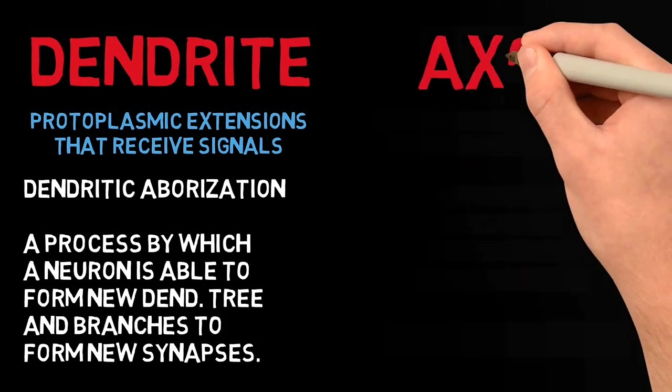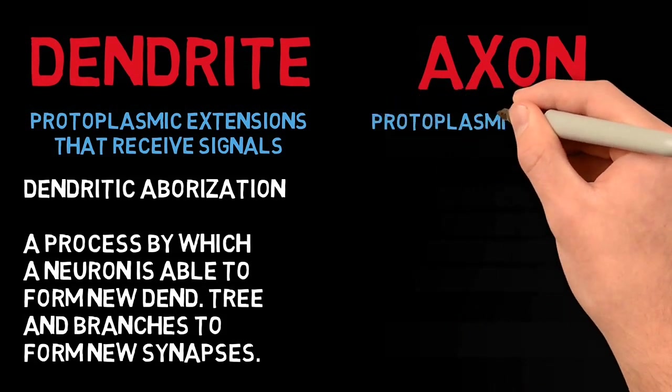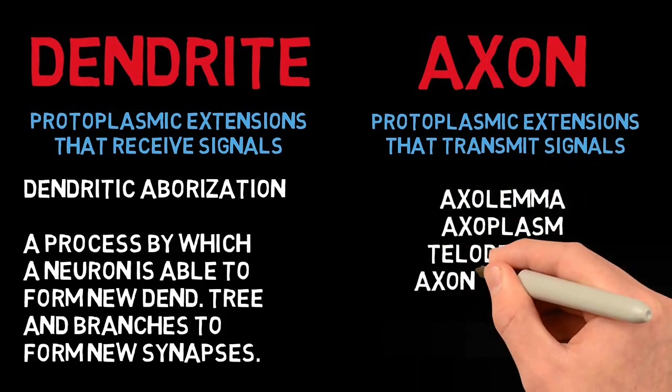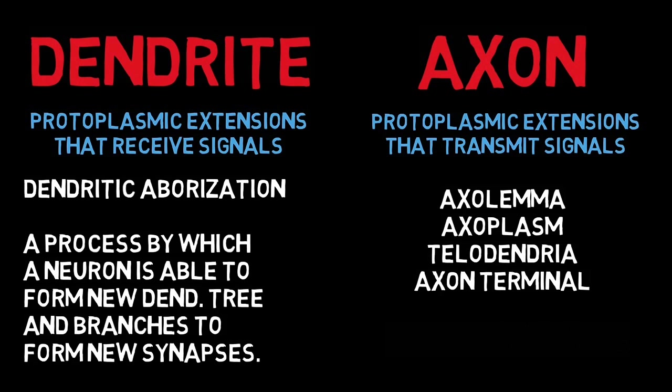Moving on to our final structure of the neuron: the axon. These are the protoplasmic extensions that transmit the signals. There are four key terms related to axon: axolemma refers to the plasma membrane of axon; axoplasm refers to the cytoplasm of axon. An axon can divide into many branches at the terminal — each of these branches is called a telodendron, and the end of each telodendron is called the axon terminal or synaptic button.